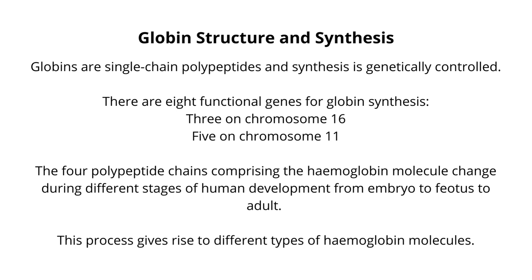The four polypeptide chains comprising the hemoglobin molecule change during different stages of human development, from embryo to fetus to adult. This process gives rise to different types of hemoglobin molecules.